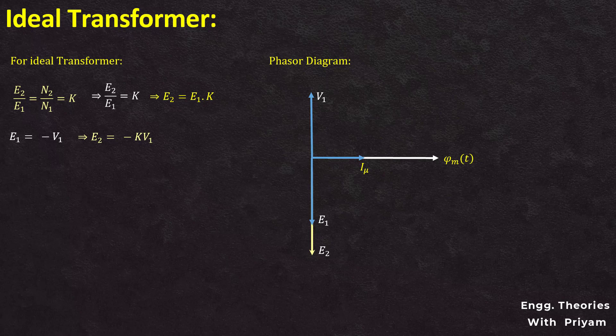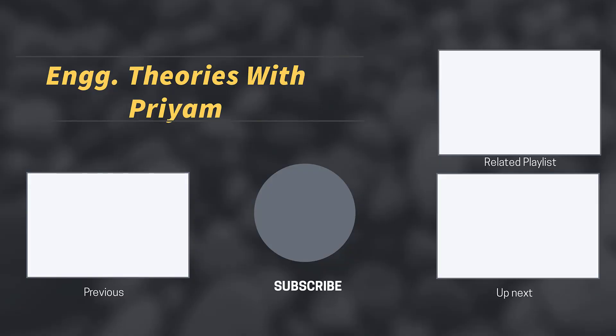So this is the phasor diagram for the ideal transformer with no-load condition. In the next lecture, we will see the phasor diagram for the ideal transformer with a loaded condition and with a resistive load. If you have any questions regarding this presentation, feel free to post them in the comment section, and don't forget to hit the subscribe button. See you in the next one.